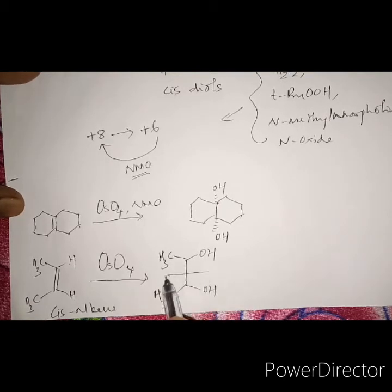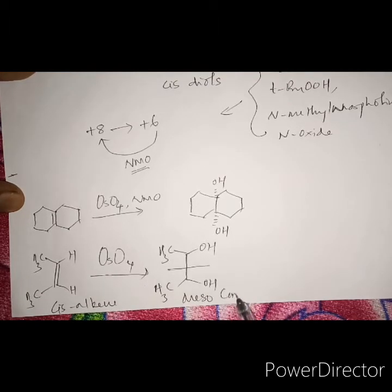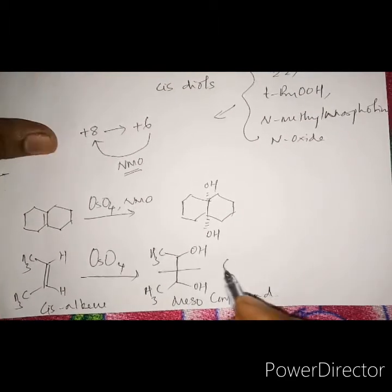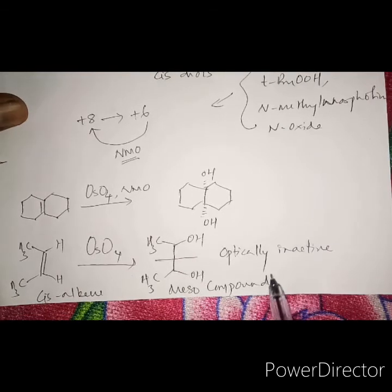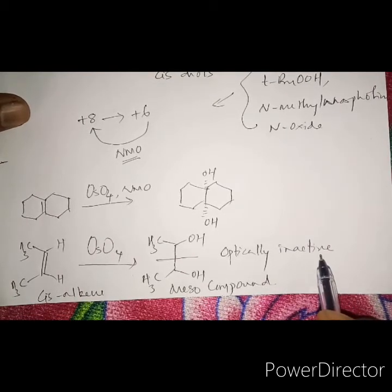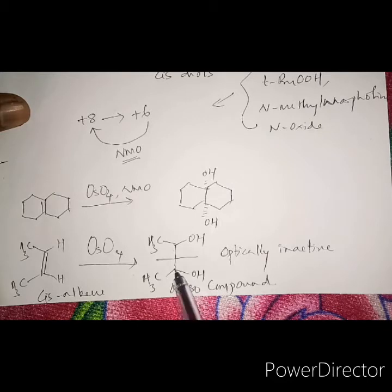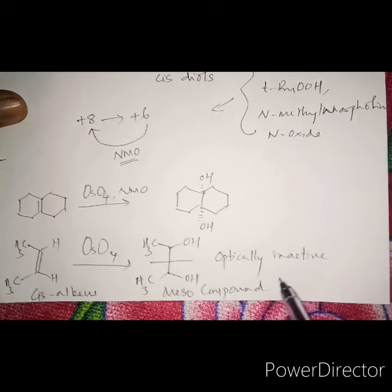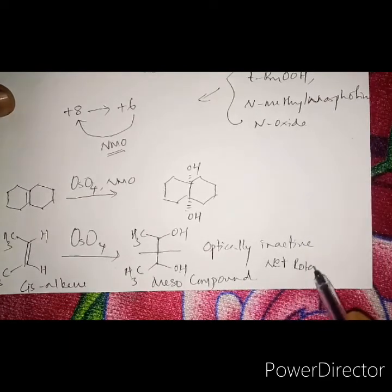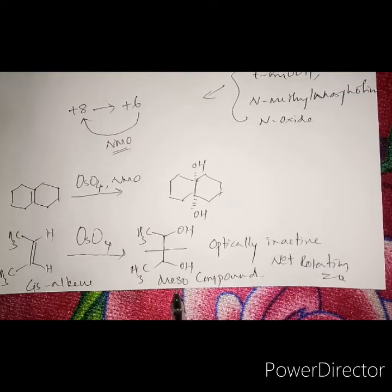You can see there is a plane of symmetry in this product — it is a meso compound. A meso compound is optically inactive: it does not rotate plane-polarized light either clockwise or anti-clockwise because of its plane of symmetry. It has one chiral carbon here and another chiral carbon here, but their rotations are opposite — one rotates light clockwise and the other anti-clockwise — so the net rotation is zero. That is why it is called optically inactive, or a meso compound.